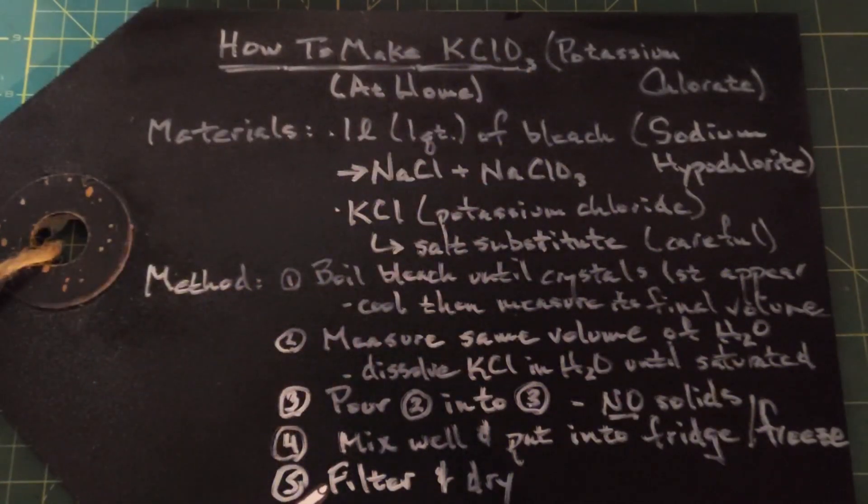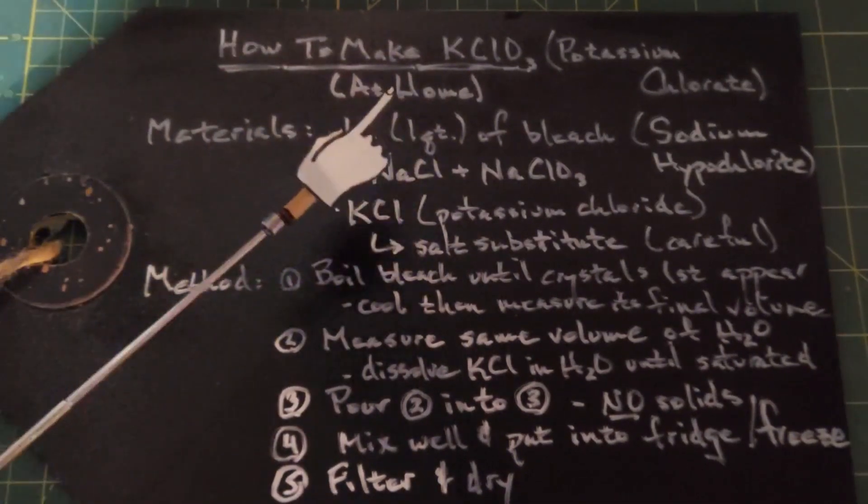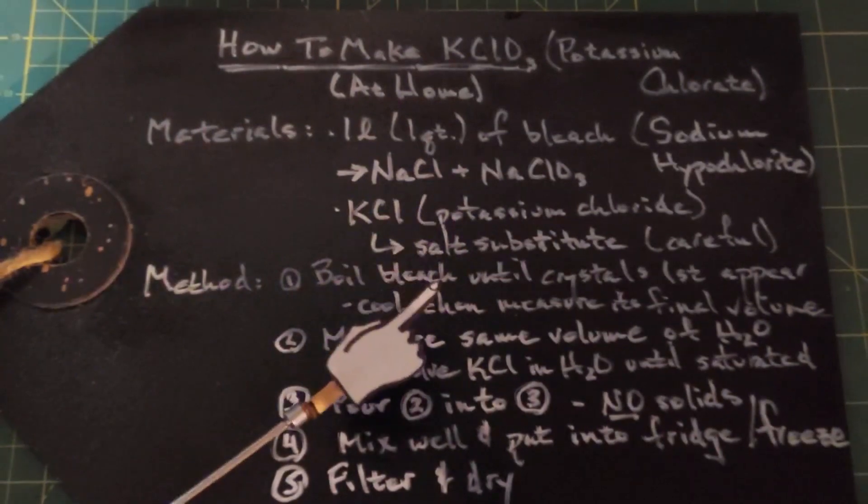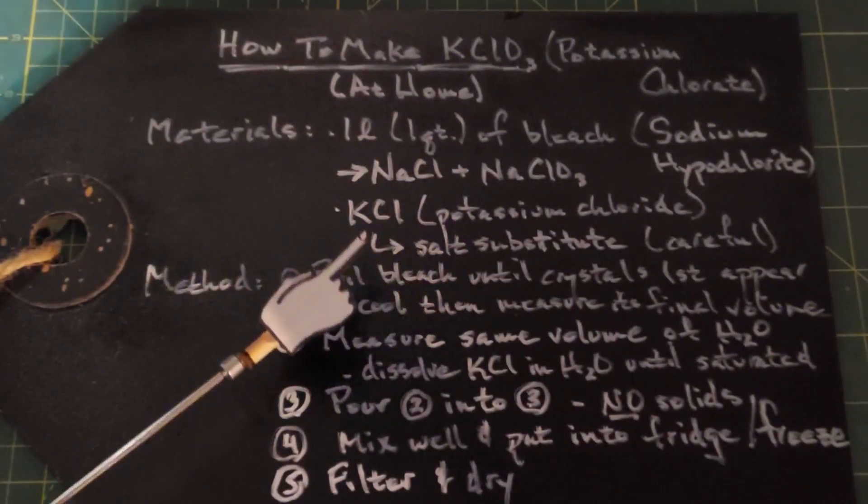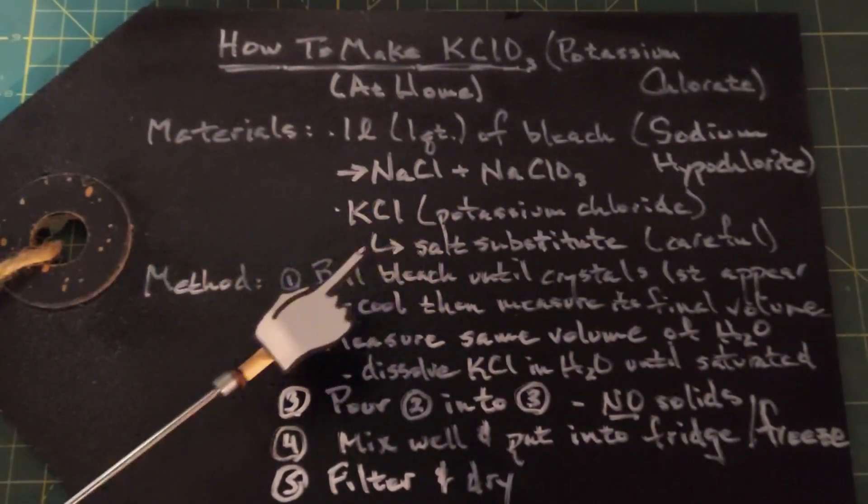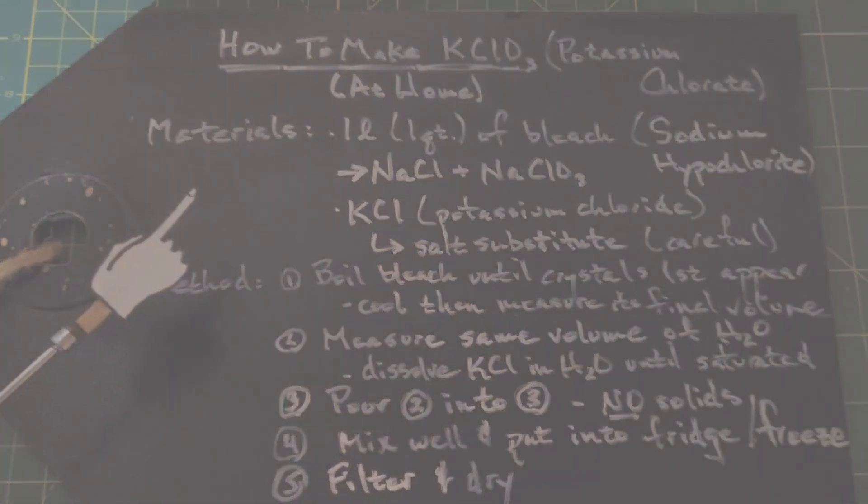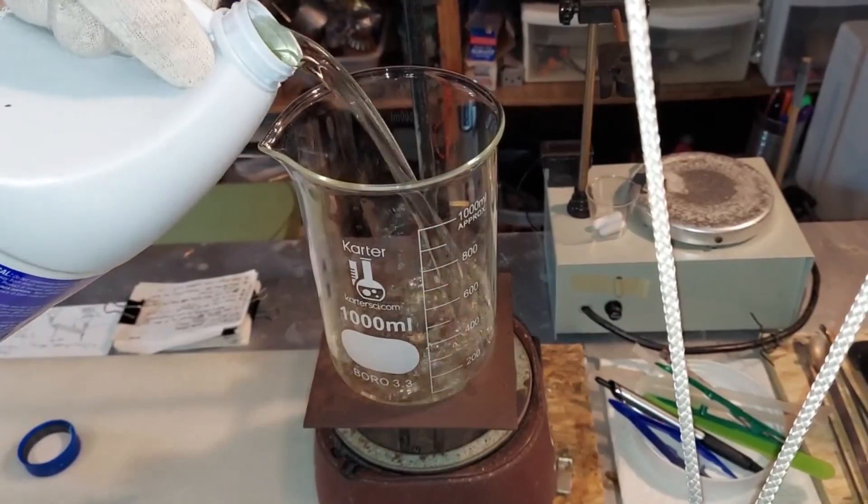You want to filter those out of the solution and then dry them. This is one of the simplest chemical experiments you can do at home. Just be careful with the bleach and especially when you're boiling it or heating it up. Do it outside or under a fume hood because the fumes are pretty caustic. And that's it, let's go do this.